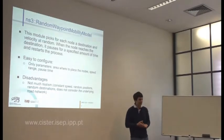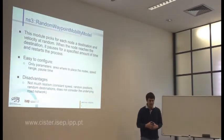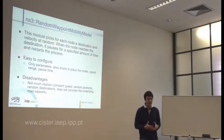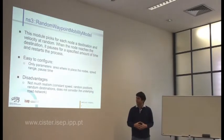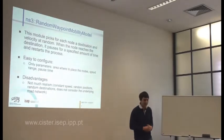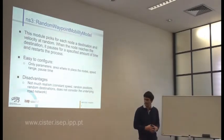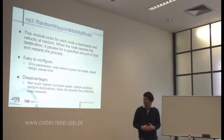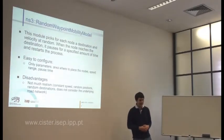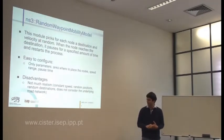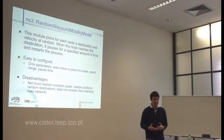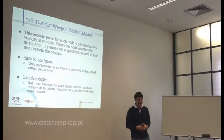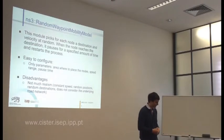The Random Waypoint Mobility Model works by picking a random velocity and a random destination. When the node reaches the next waypoint, it pauses and restarts the process. It moves between waypoints at a constant speed and is relatively easy to configure — the user only needs to specify the simulation area, the speed range, and the pause time. However, the disadvantage is that it's not very realistic: it does not consider underlying road networks, and the constant speed and random positions hurt realism. Research has also shown these models can adversely impact routing protocol performance.